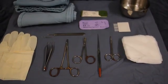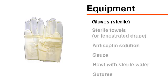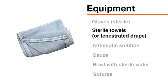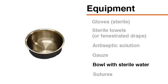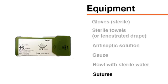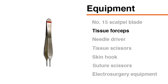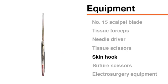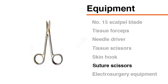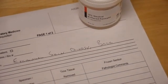Once the local anesthetic has been administered, gather the following items on a sterile tray: sterile gloves, sterile towels or a fenestrated drape, antiseptic solution such as chlorhexidine or povidone iodine, gauze, a bowl with sterile water, sutures including a non-absorbable monofilament suture for skin and an absorbable suture for deep tissue if needed, a number 15 scalpel blade and handle, toothed forceps, a needle driver, tissue scissors such as Stevens scissors, a skin hook, suture scissors such as iris scissors, electrosurgery equipment if available, a specimen bottle, and a pathology request form.